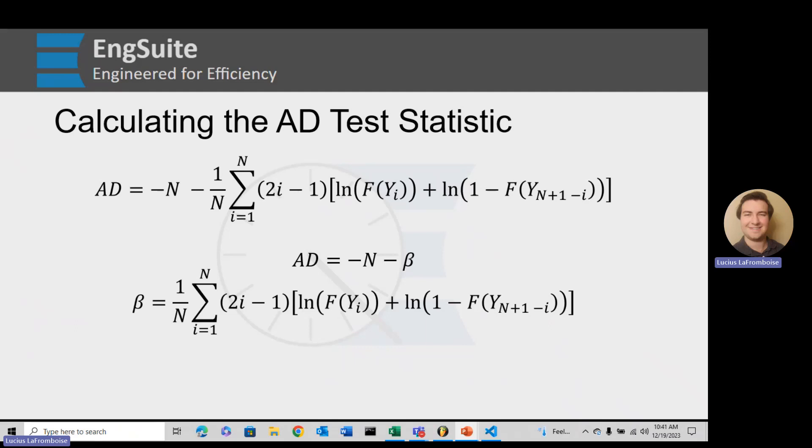Because later in this video, we are going to actually go into a spreadsheet software, and we are going to do this by hand. So to calculate the Anderson-Darling test statistic, AD equals minus N, N is the number of samples, minus 1 over N times the sum of all of this stuff to the right.